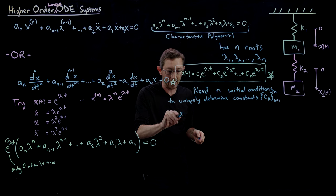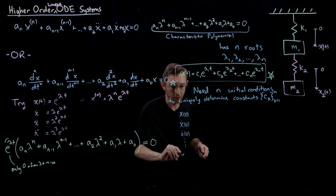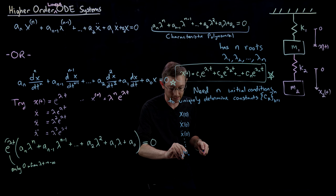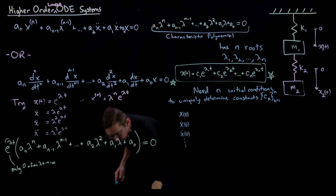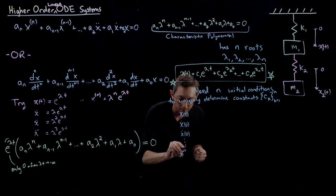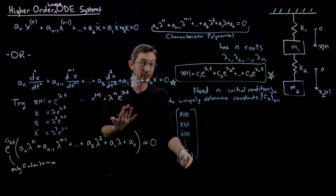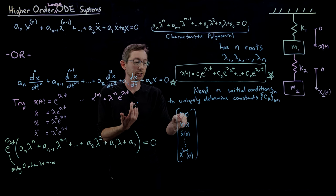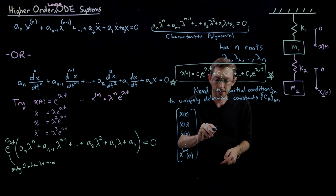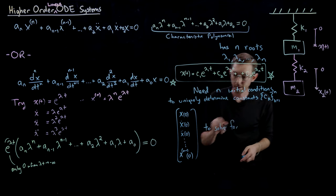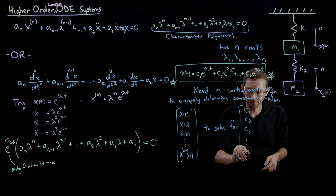Typically you would use x at time zero, x-dot at time zero, x double-dot at time zero, all the way to the (n−1)th derivative of x at time zero. If x were a position, this would be the initial position, the initial velocity, the initial acceleration, and so on. You would use this to solve for my vector of c₁, c₂, c₃, ..., cₙ.